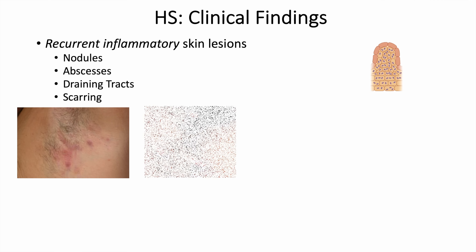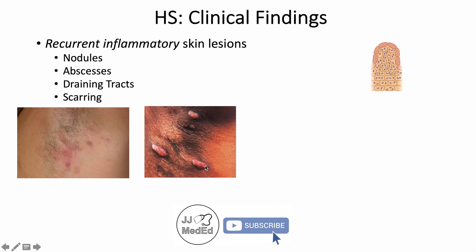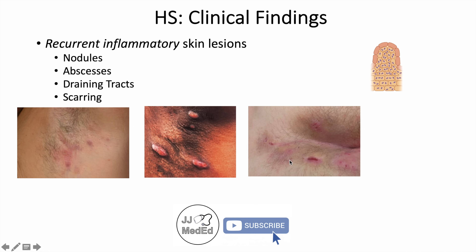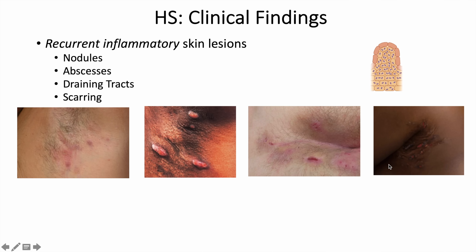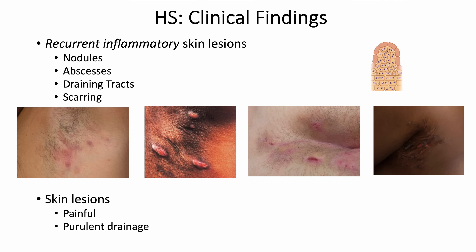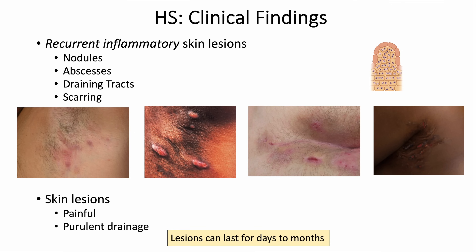Looking at examples, you can see lesions in the axilla including abscesses and possible sites of drainage. Around the gluteal area, there may be draining tracts. In another area, the skin is very eroded with draining tracts that have essentially ruptured. These skin lesions are painful and have purulent drainage or pus, and when they occur they can last for days to months.